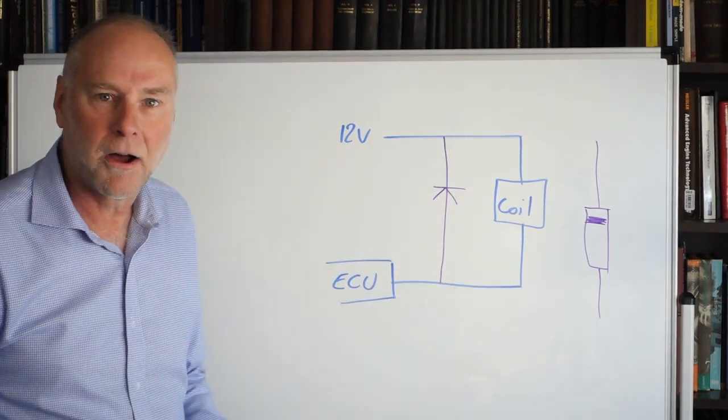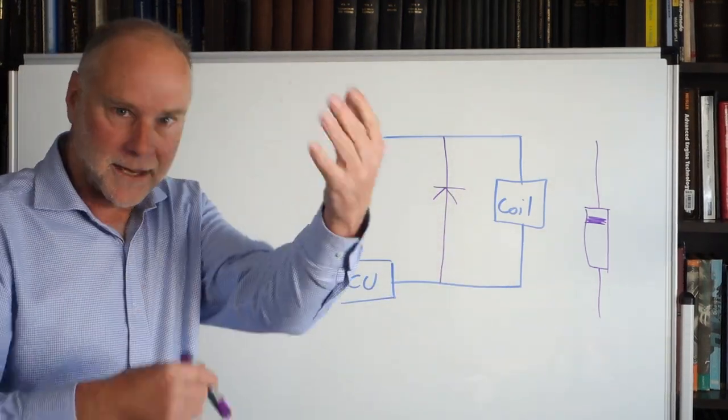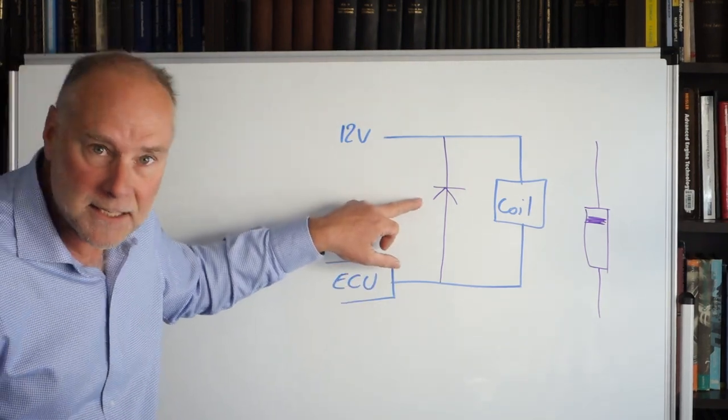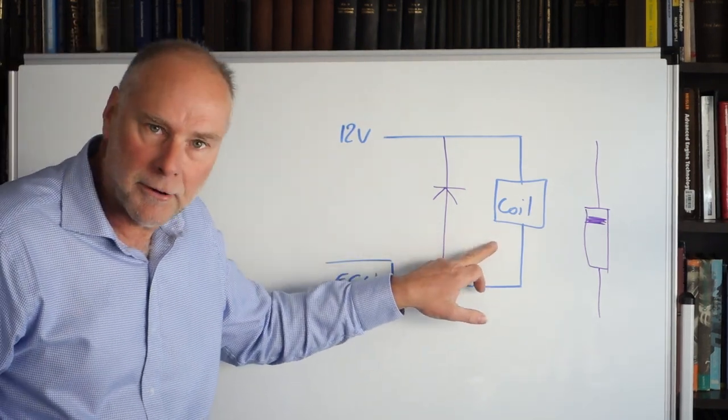That's why it's called a freewheeling diode, because it freewheels, the current freewheels around the circuit. So this is a protection diode. It's been mounted across the coil.